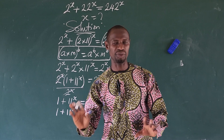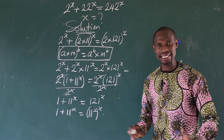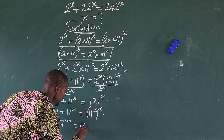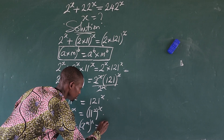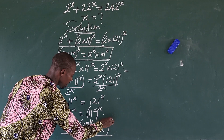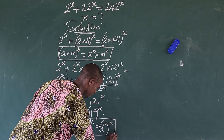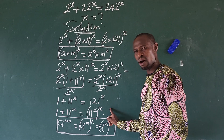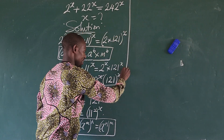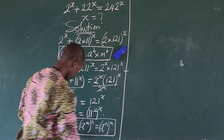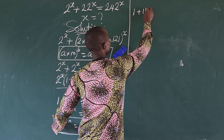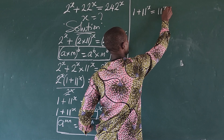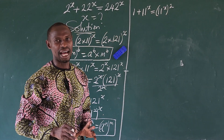According to the law of indices, we can interchange the power. The law says that a to the power of m·n equals a to the power of (m)^n, which also equals a to the power of (n)^m. We've used this law in many of our challenges. So we can bring the x inside and write 11 to the power of (x) all squared, giving us 1 + 11 to the power of x equals (11 to the power of x) squared.